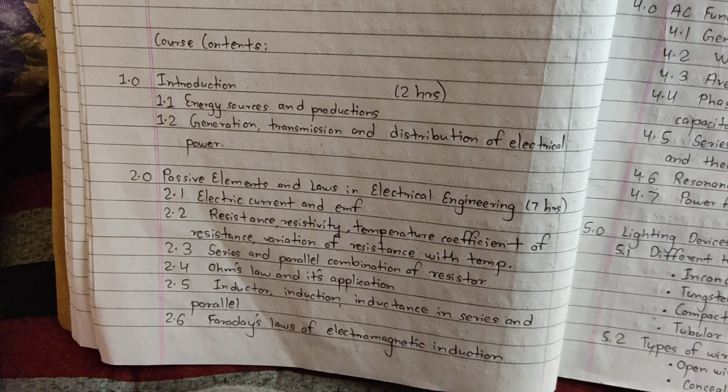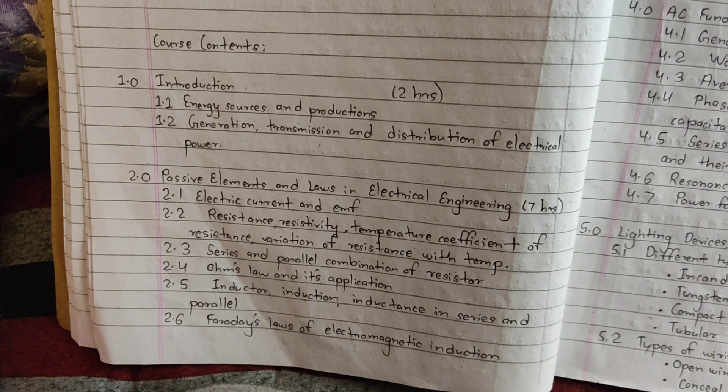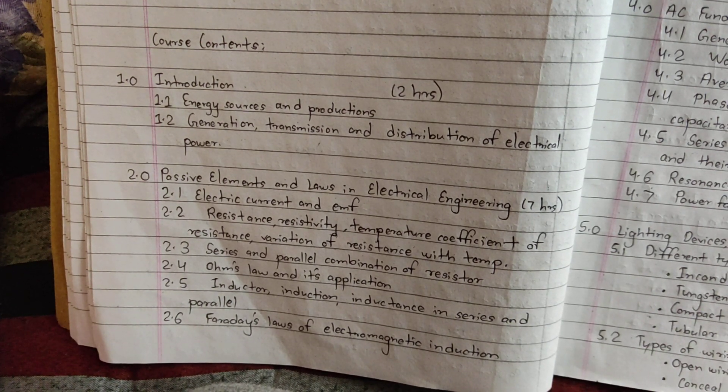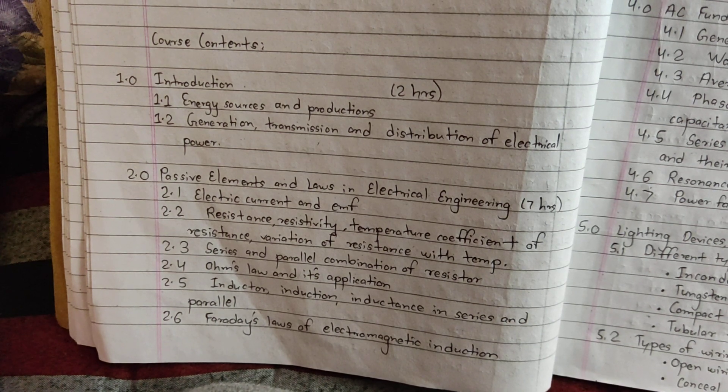Chapter 2 is Passive Elements and Laws of Electrical Engineering: electric current and EMF, resistance, resistivity, temperature coefficient of resistance, variation of resistance with temperature.